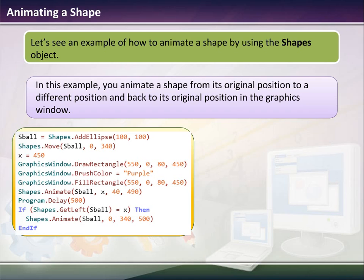We're going to define S-ball, which will probably be like a softball. We're going to add an ellipse, which is 100 by 100. Then we're going to move the shape to 0, 300. We're going to define the variable x as 450. Then in the graphics window, we're going to draw a rectangle. We're going to use a brush color of purple. We're going to fill the rectangle with the same coordinate points. And so this is like the x, y's from the corners.